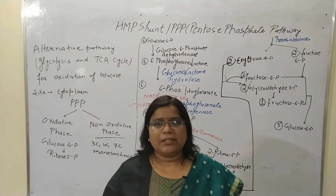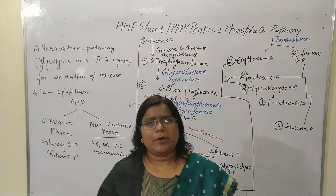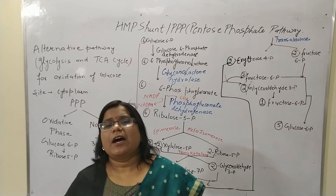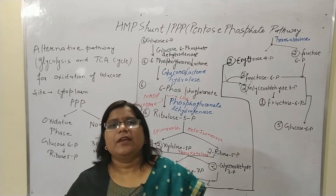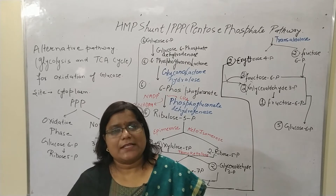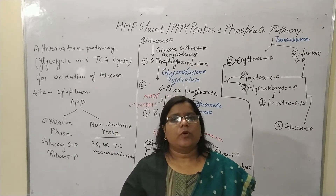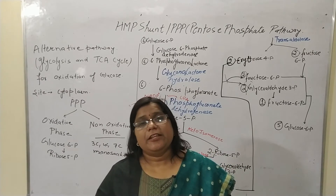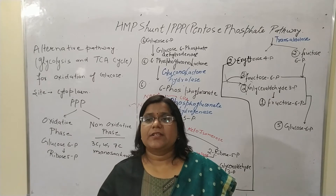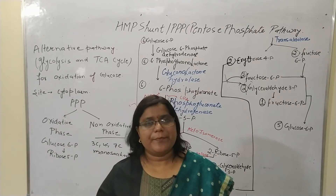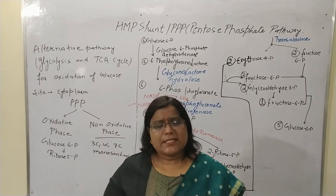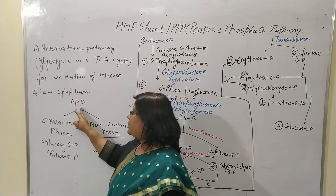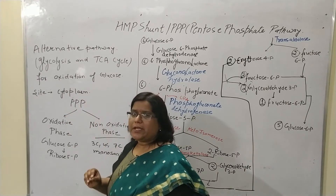It is an alternative pathway for glycolysis and the TCA cycle. Suppose our cell is not able to run glycolysis and the tricarboxylic acid cycle — in that case, the cell produces energy in the form of NADPH by the help of the HMP shunt or HMP pathway. The site of this pathway is the cytoplasm, and the Pentose Phosphate Pathway, PPP in short form, takes place in two phases.